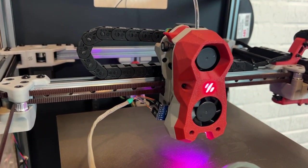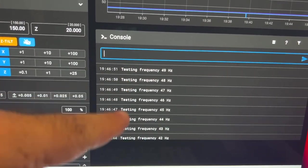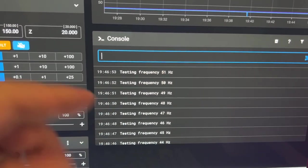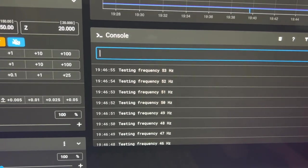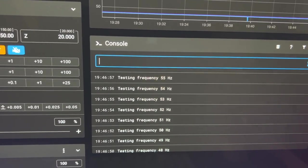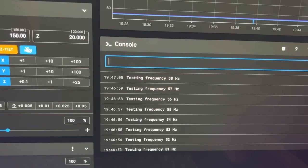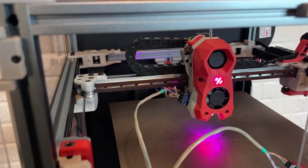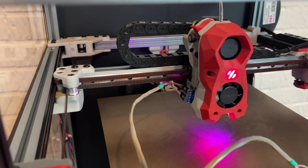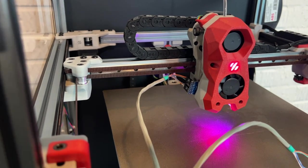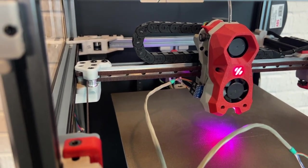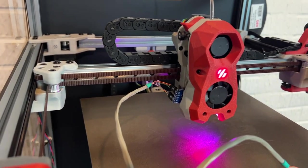You can see it's just testing all the different range of frequencies. And while it's doing that the tool head's just vibrating and oscillating at different frequencies. And the ADXL sensor is keeping track of all that data. As it starts to get to the higher frequencies, it's probably in the 50s and 60s right now. You might really start to hear it. And that's totally normal.